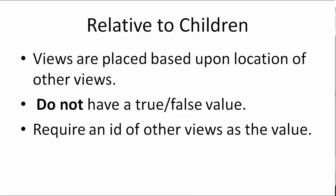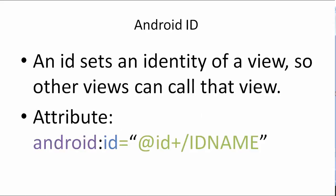Relative to children: when views are relative to other views, they are placed based upon the location of those other views. For example, you can arrange a text view so it is to the right of an image and at the bottom of another text view. Unlike the previous attributes, these attributes do not have a true/false value — instead, they require the ID of other views. An ID basically sets an identity for a view so that other views can reference that specific view by its ID.